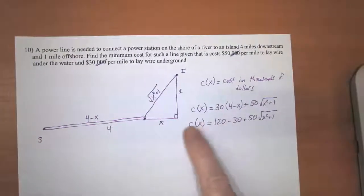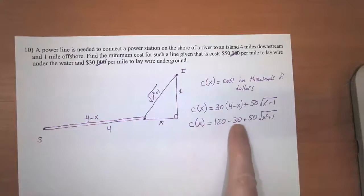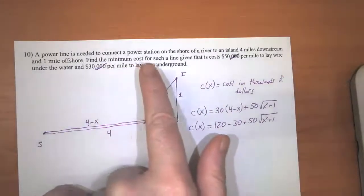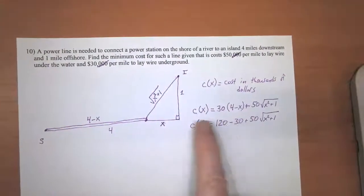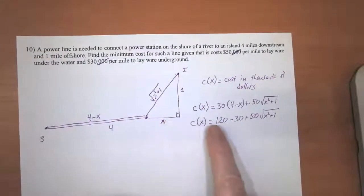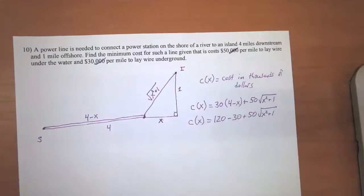And what we're going to do now is find the value of x that minimizes this function, because we want to find the minimum cost for this project. We want to find the value of x that makes this cost as low as possible. To find the minimum value of a function, we are going to take the derivative of c.